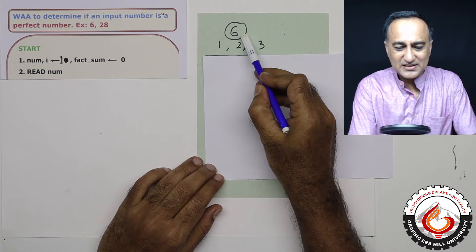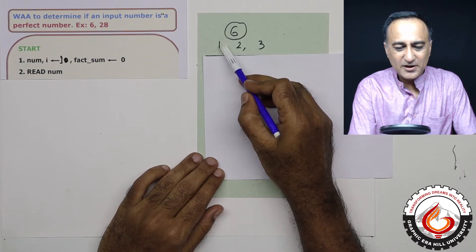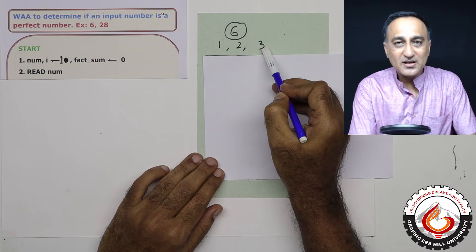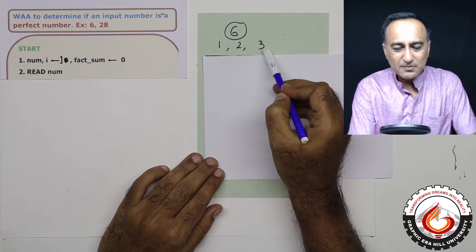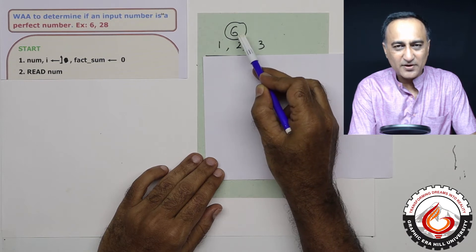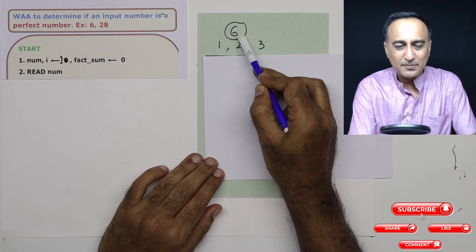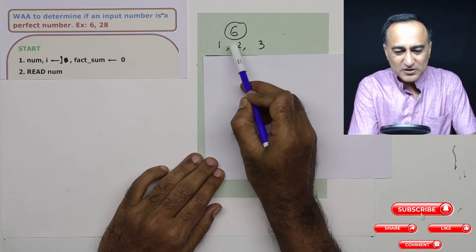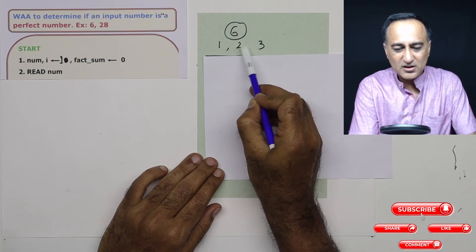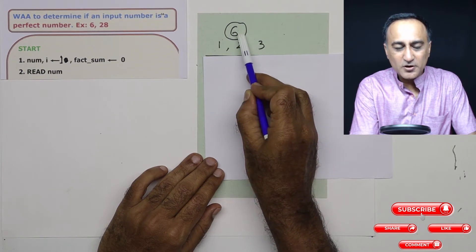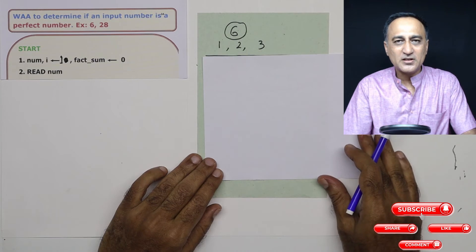Let's take the number 6. The first factor of 6 is 1, since 6 divided by 1 gives remainder zero. 6 divided by 2 the remainder is zero. 6 divided by 3 the remainder is zero. Any number more than 3 is not going to divide 6, because 4 cannot divide 6, 5 cannot divide 6, and we don't consider the number itself. So the factors of 6 are 1, 2, and 3. One plus two is three, three plus three is six. So if the sum of the factors is equal to the original number, such a number is known as a perfect number.